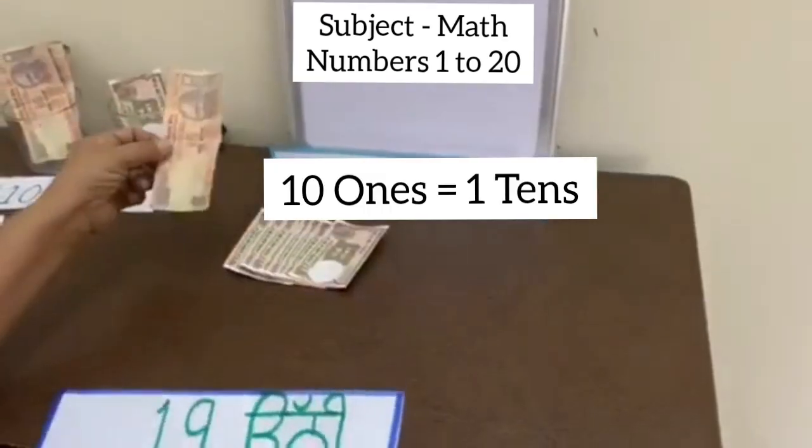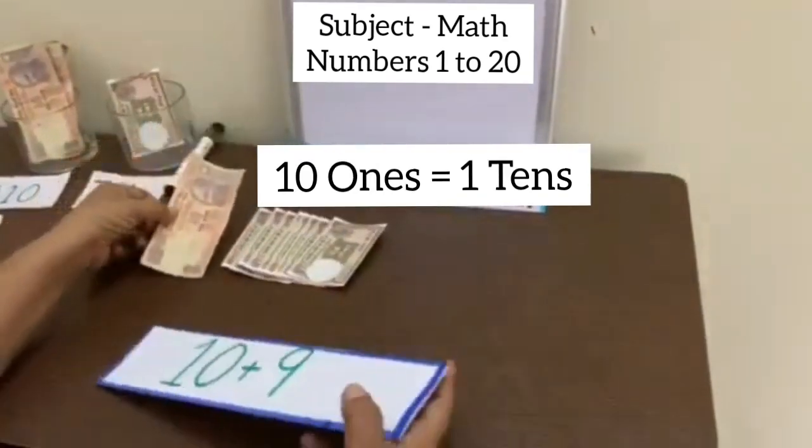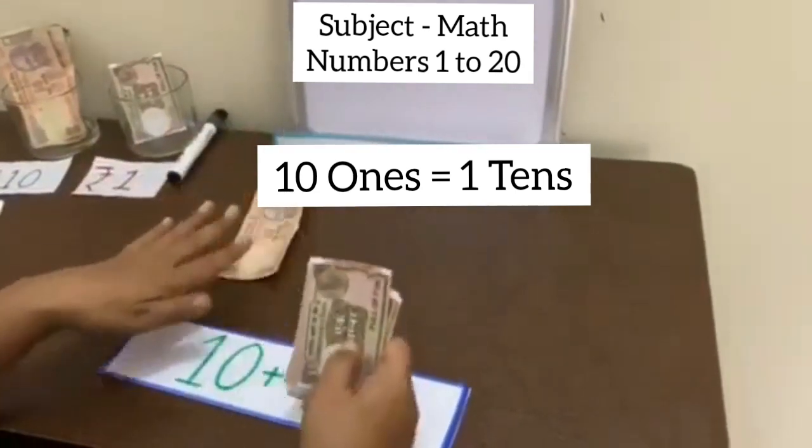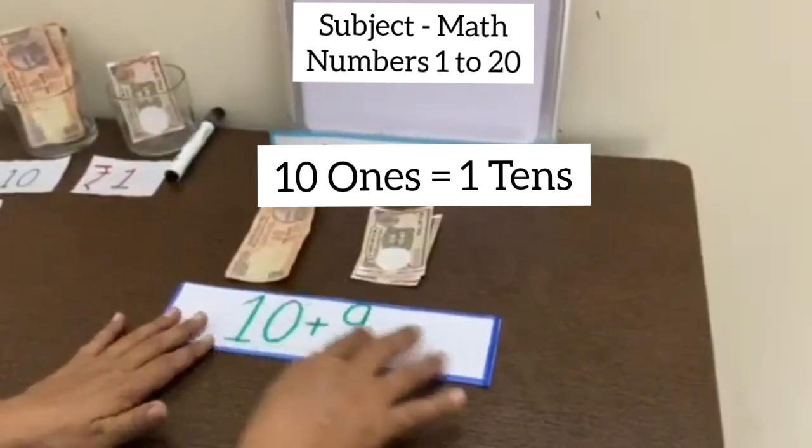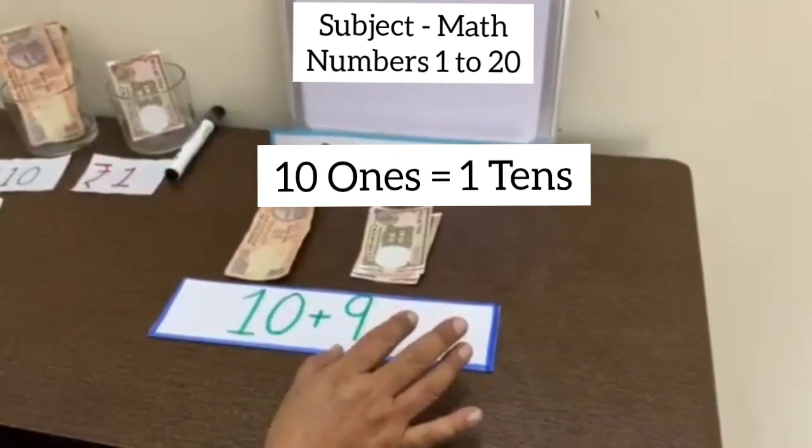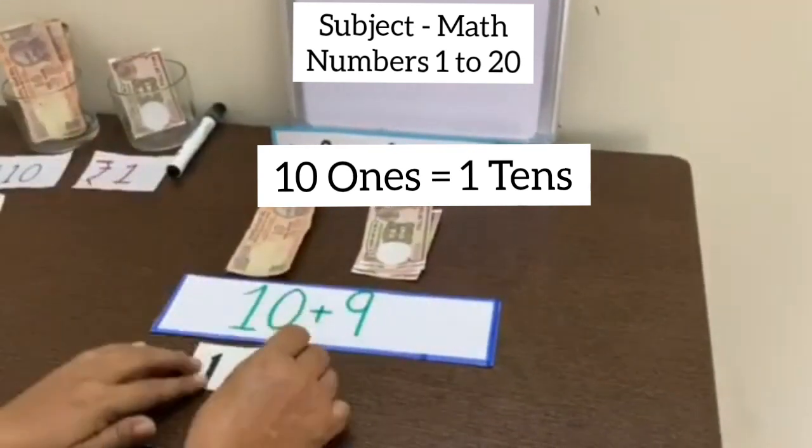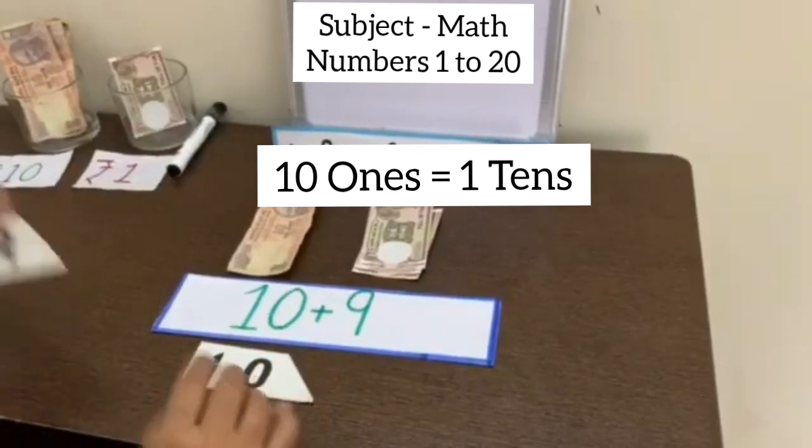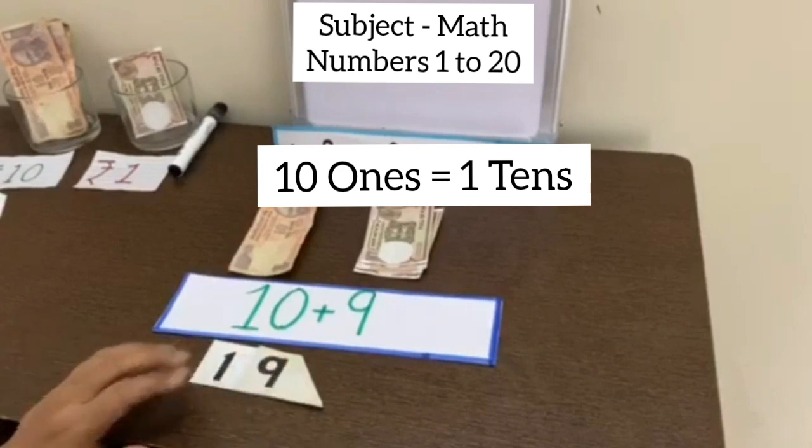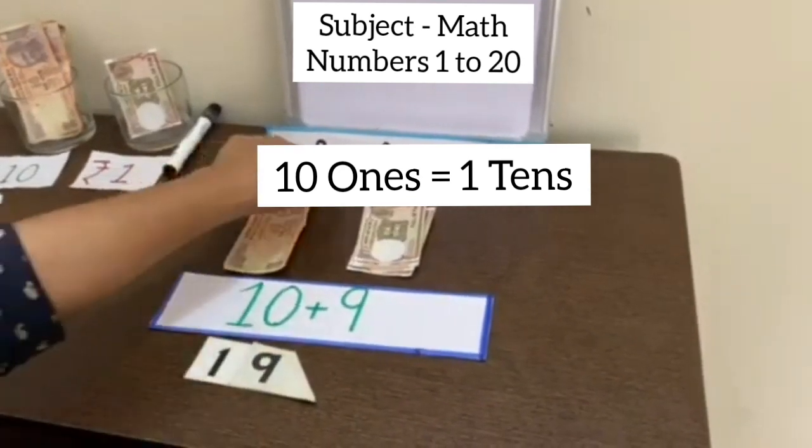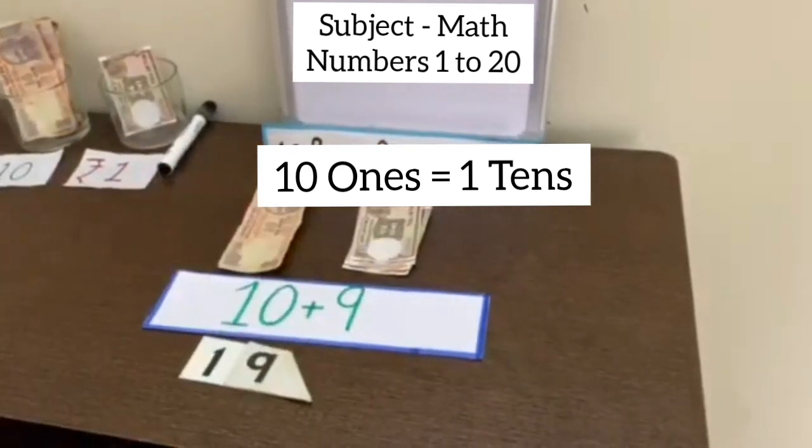Here we have 1 note of rupees 10 and 9 notes of rupees 1. So now if we represent this on maan card, maan card of 10, then 1 maan card of 9. Now if we talk about 1s and 10s, rupees 1 notes are 1s and rupees 10 notes are 10s.